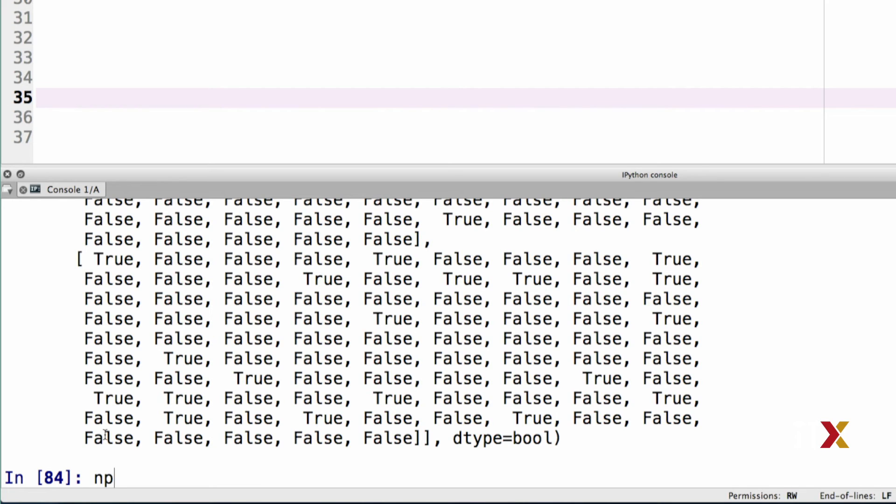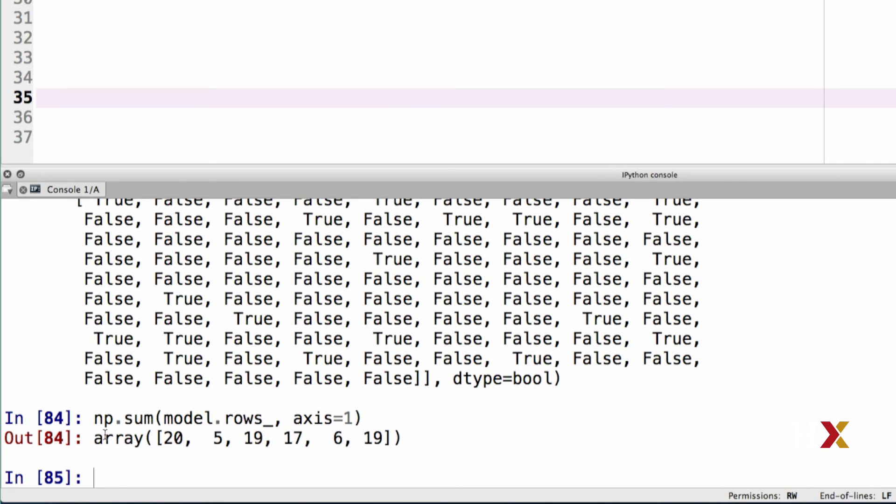If we sum over the columns of this array, we can find out how many observations belong to each cluster. Let's try it out. We'll use numpy sum. We'll take the model.rows and we specify the axes. Remember, axis zero is rows, axis equal to one is columns. The output tells us how many whiskies belong to cluster 0, cluster 1, cluster 2, and so on. For example, here 19 whiskies belong to cluster number 2.